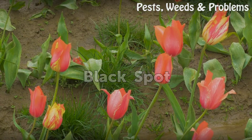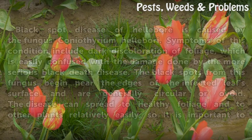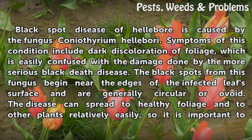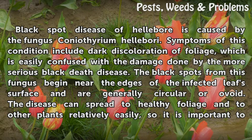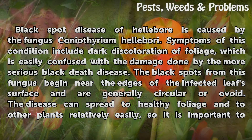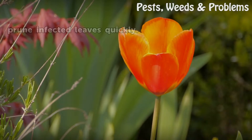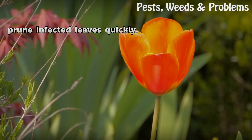Black Spot. Black Spot disease of Hellebore is caused by the fungus Coneophyraeum hellebore. Symptoms of this condition include dark discoloration of foliage, which is easily confused with the damage done by the more serious Black Death disease. The black spots from this fungus begin near the edges of the infected leaves' surface and are generally circular or ovoid. The disease can spread to healthy foliage and to other plants relatively easily, so it is important to prune infected leaves quickly.